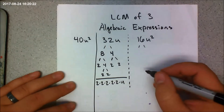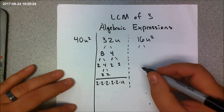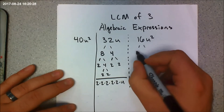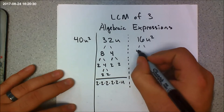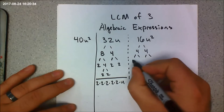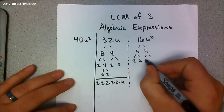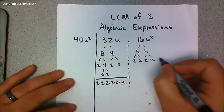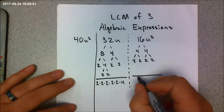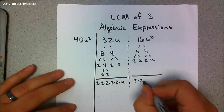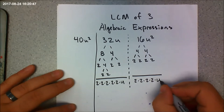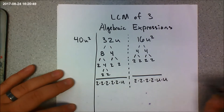Now I'll find the prime factorization of 16u squared. I break that up into 4 times 4, which gives me 2 times 2 and 2 times 2. So the prime factorization is 2 times 2 times 2 times 2 times u times u — two u's, since it's u squared.